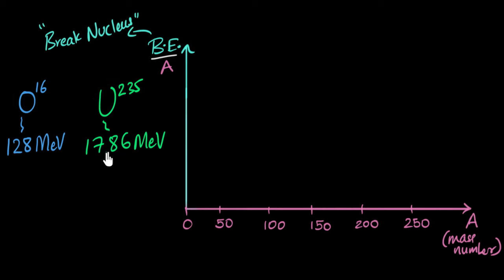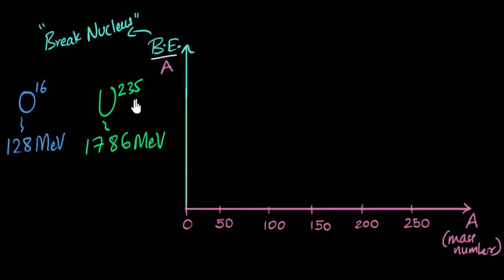A very quick question: do you think we can use this to say that uranium is more stable compared to oxygen, because it takes more energy to break uranium? Well, it sounds reasonable, but oxygen would say: I only have 16 particles with me, so obviously it's easier to break me. Whereas in uranium, there are 235 particles all pulling on each other and keeping each other together — it's a bigger family, so it takes more energy to break it. That's an unfair comparison.